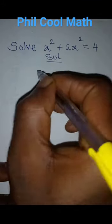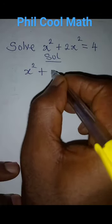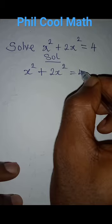Hello everyone, let's solve this very quickly. x squared plus 2x squared equal to 4.